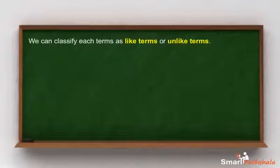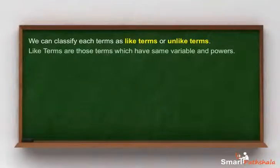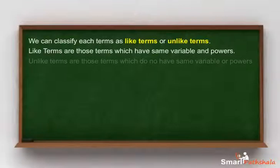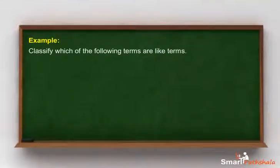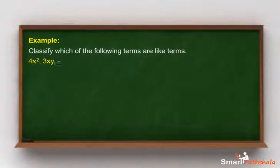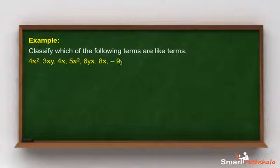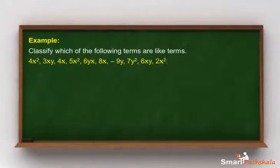We can classify each term as like terms or unlike terms. Example: classify which of the following terms are like terms: 4x squared, 3xy, 4x, 5x squared, 6yx, 8x, minus 9y, 7y squared, 6xy, 2x squared, 5y squared, 7y.